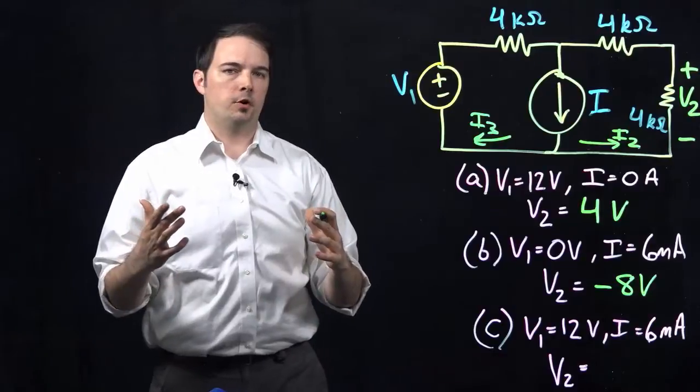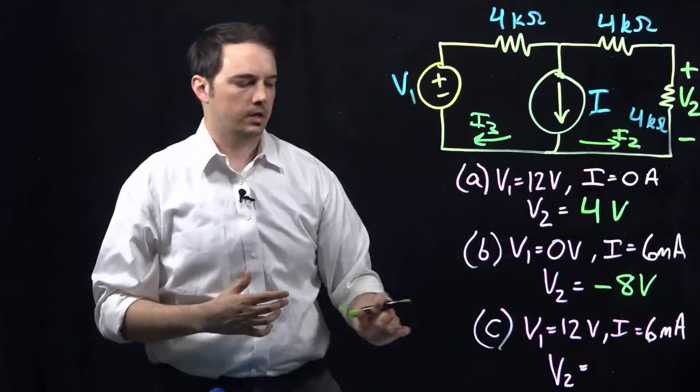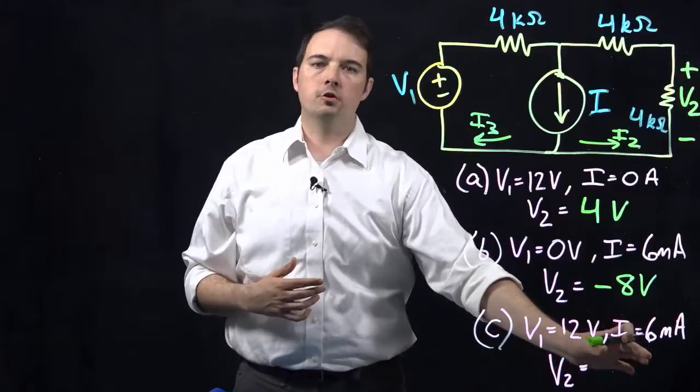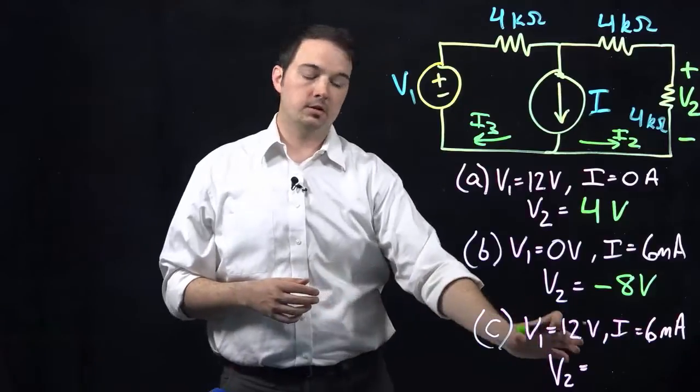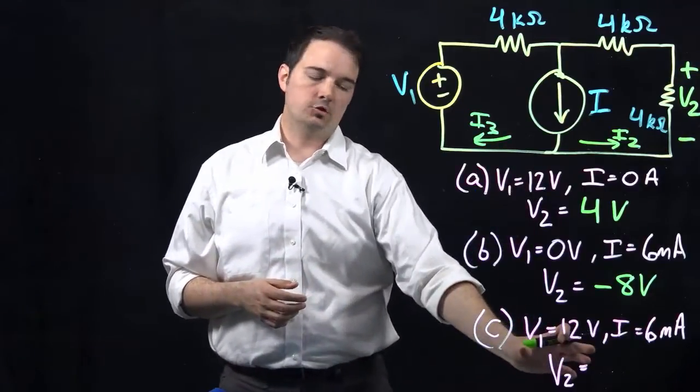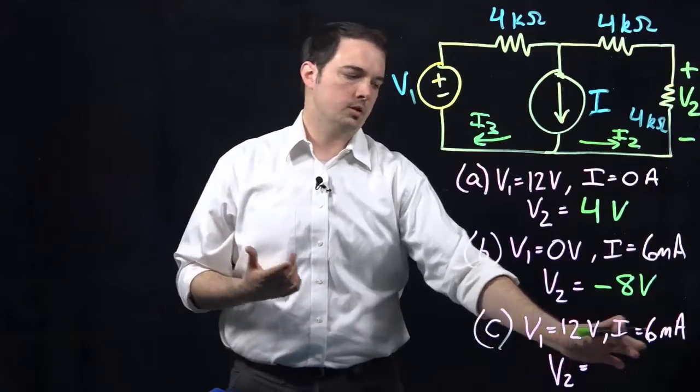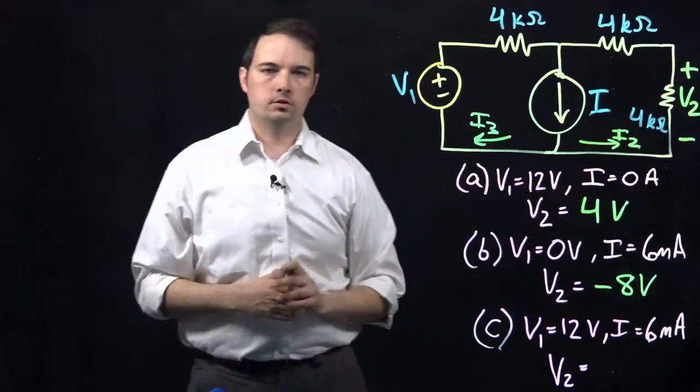So in the third and final part of this problem here, what we're looking at now is that both the voltage source and the current source is going to be active to now figure out what voltage V2. But notice that the values are the same as what we've used in parts A and B. So the voltage source is set to a quantity of 12 volts, and the current source is set to a value of 6 milliamps. Those are the same values here.